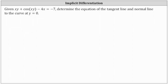We are given an implicit equation and asked to determine the equation of the tangent line and the normal line to the curve at y equals zero. Let's first determine the point we're concerned about on the curve, which is the point where y equals zero. To find the x-coordinate, we'll substitute zero for y into the equation and solve for x.